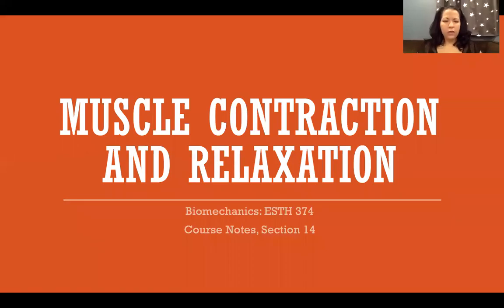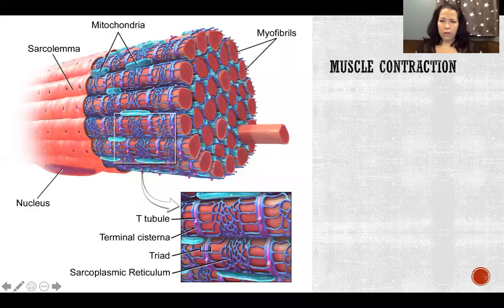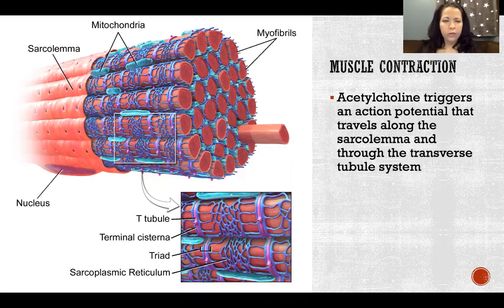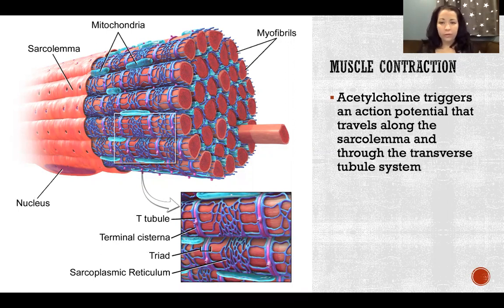In this video I'm going to talk about muscle contraction and relaxation. We just talked about in the last video what happens at the neuromuscular junction that triggers an action potential in the muscles. Now we're going to talk about what happens after that.